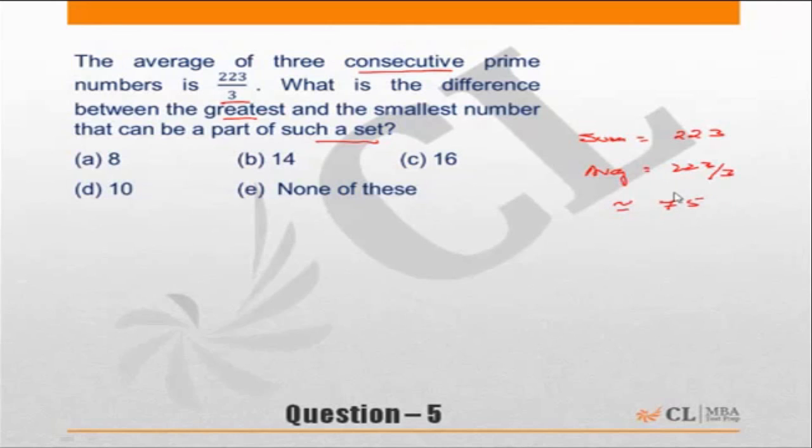The keyword here is they have to be consecutive. So let's look at prime numbers close to 75. The closest is 73, then if you go beyond 73, next should be 79.